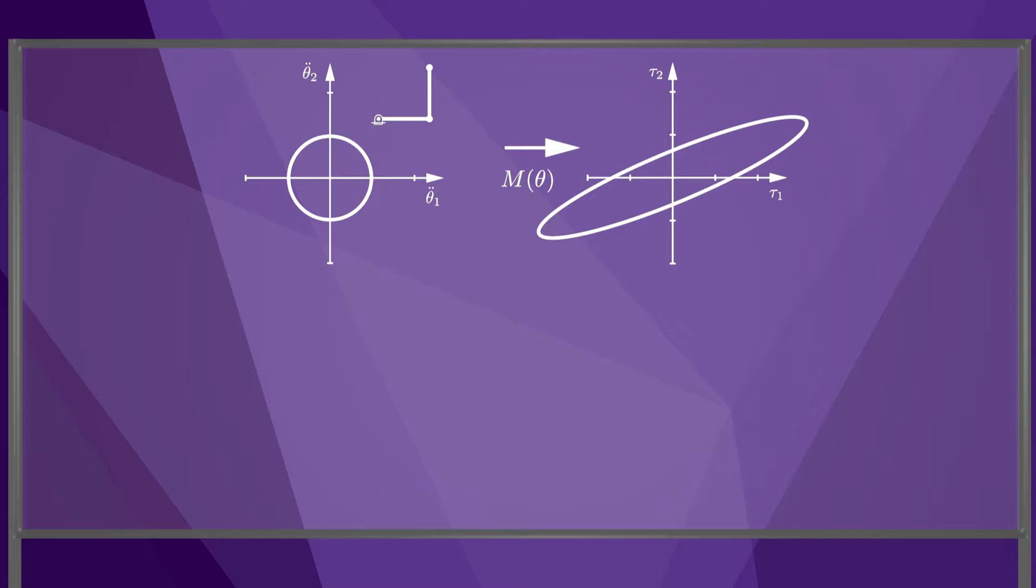The directions of the principal axes of the ellipse are given by the eigenvectors of the mass matrix, and the lengths of the principal semi-axes are given by the eigenvalues.